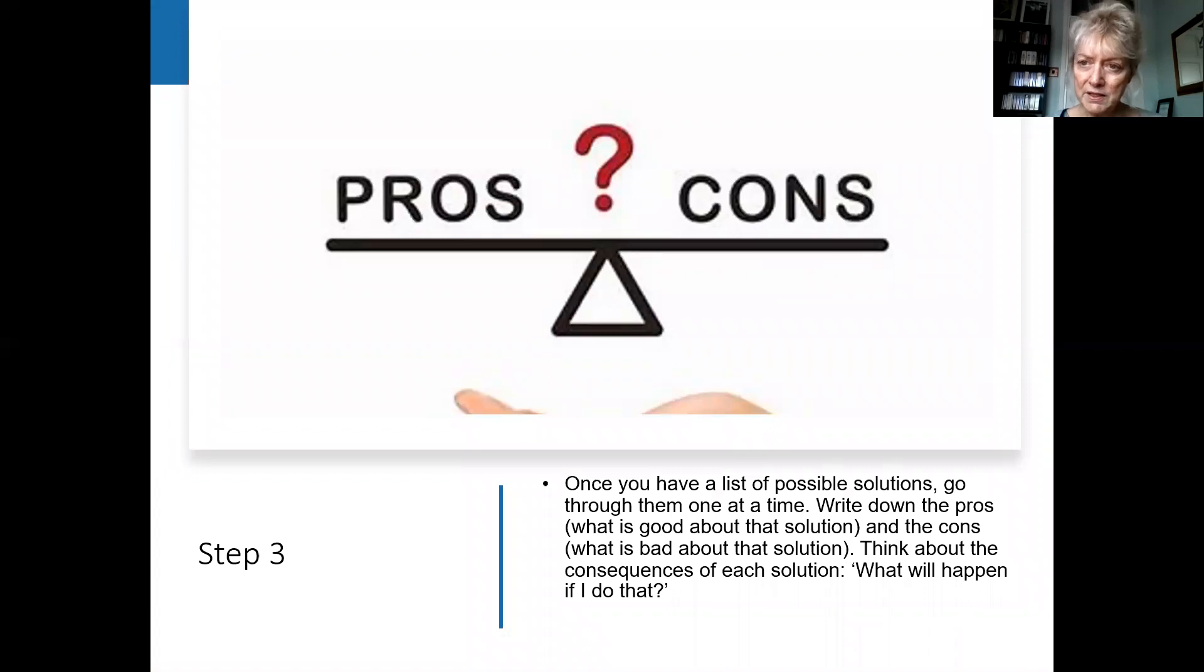Once you've got that list of possible solutions, step three is that you go through them one at a time and write down the pros, what's good about that solution, and the cons, what's not so good, what's bad about that solution possibly, and think about the consequences of each solution. So it's almost like you have three different columns then. You've got your pros and cons and then you've got what you actually think will happen if you do that. So what the consequences are. So pros, cons, and consequences.